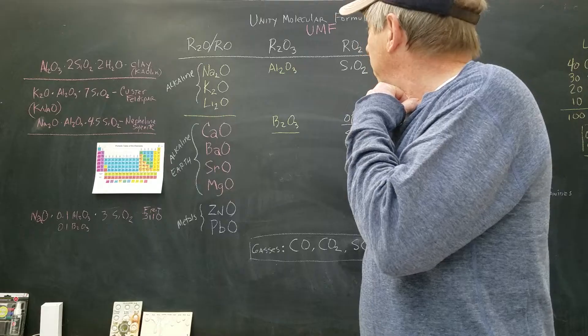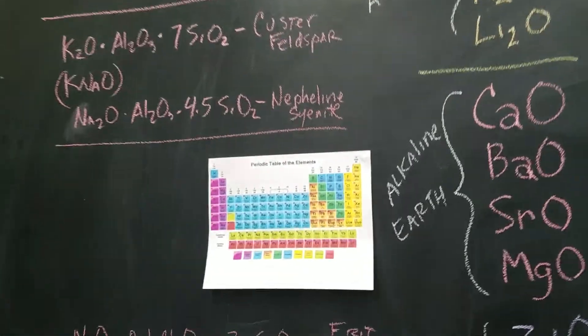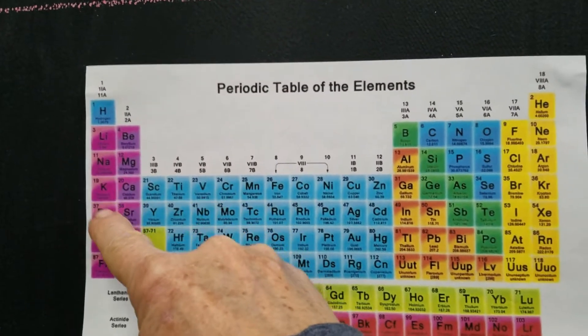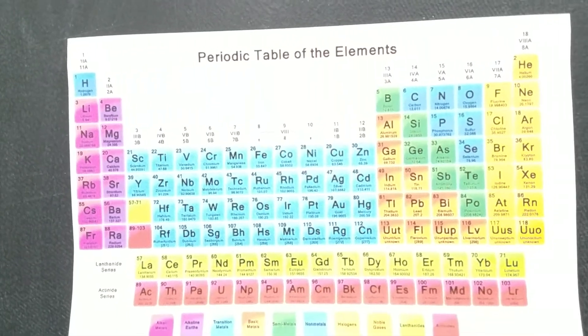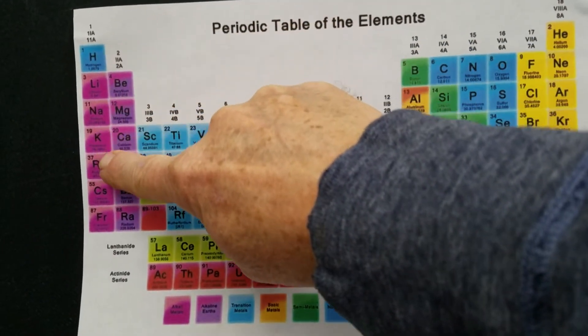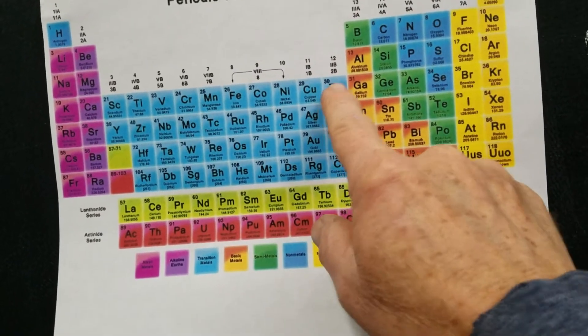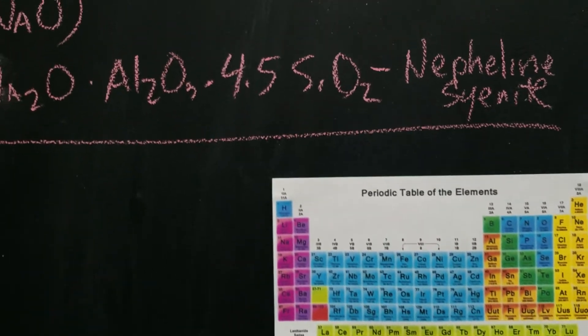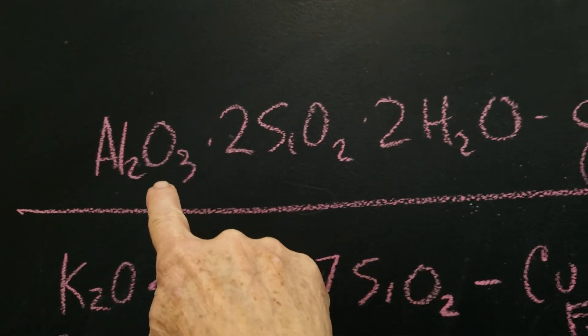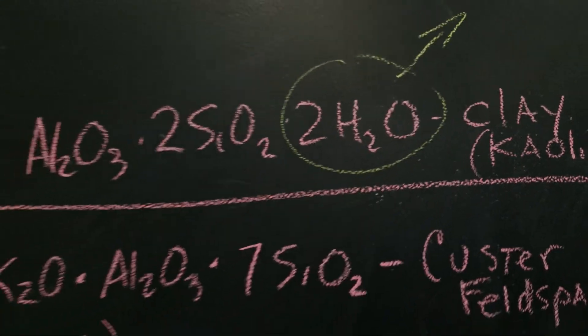Now what I might do is just show you a little bit about the structure of things here. Here we have our periodic table. Here's our alkaline, here is our alkaline earth, here was our lanthanoids, here was our lead and zinc. Here is the structure of kaolin, and if we heat that up, this will go off as a gas and become ceramic.